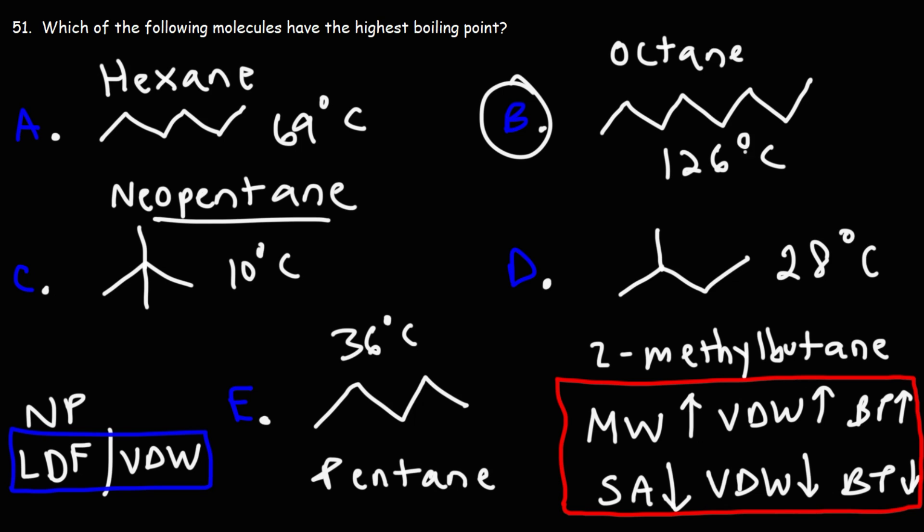So the structure with the highest molecular weight is going to have the highest boiling point. And the one that also has a straight chain has the highest boiling point. Branching reduces the boiling point because it reduces the area of contact between the molecules.